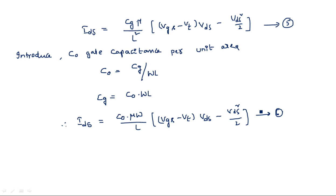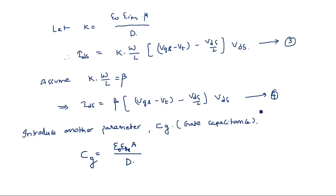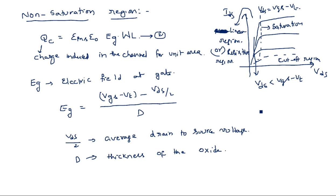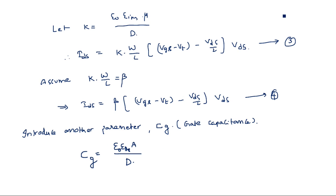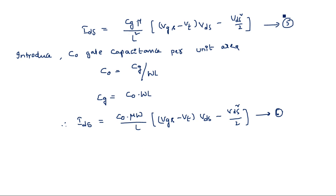These four equations are all calculated for the non-saturation region. Now we need to do the calculation for the saturation region. The saturation region starts when VDS is greater than VGS minus VT. The device enters saturation at the boundary point where VDS equals VGS minus VT. We will substitute this condition into all four equations — k, beta, CG, and C_naught.